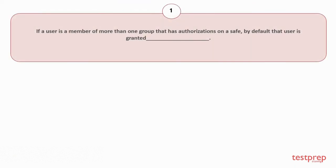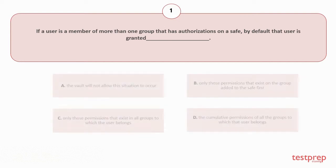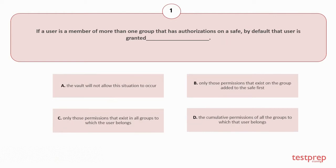Question number 1: If a user is a member of more than one group that has authorizations on a safe, by default that user is granted — Your options are: A. The vault will not allow this situation to occur. B. Only those permissions that exist on the group added to the safe first. C. Only those permissions that exist in all groups to which the user belongs. D. The cumulative permissions of all the groups to which that user belongs.